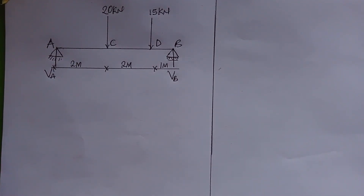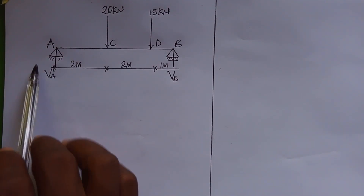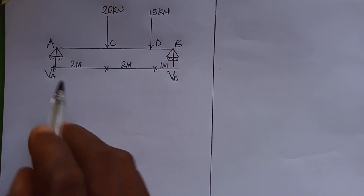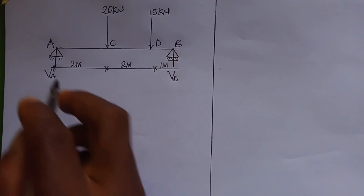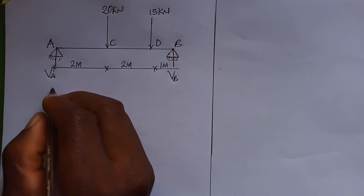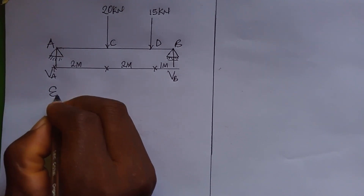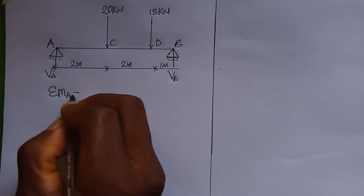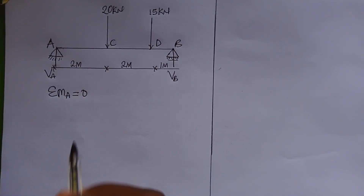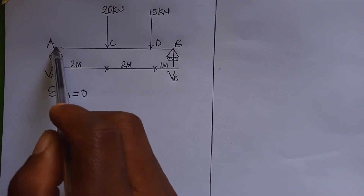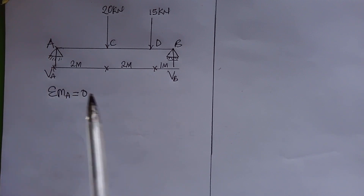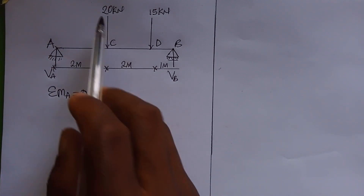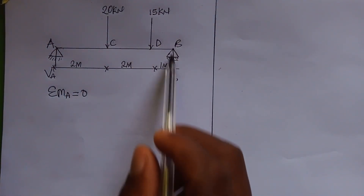Having done that, you are going to take moment either at point A or point B. Let's take moment at point A. Summation of moment at point A equals zero, meaning the moment about point A should be equal to zero. Moment is the product of force and distance, so all these forces are multiplied by their distance from point A.